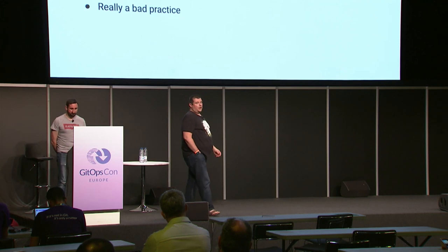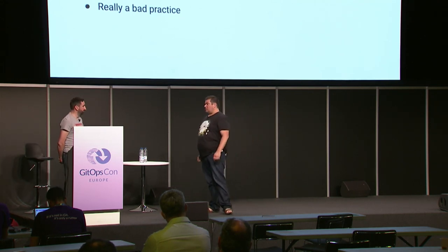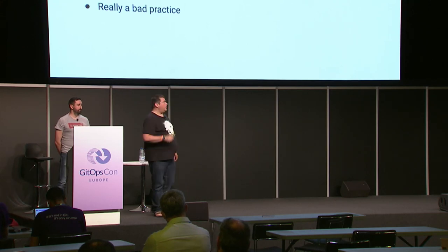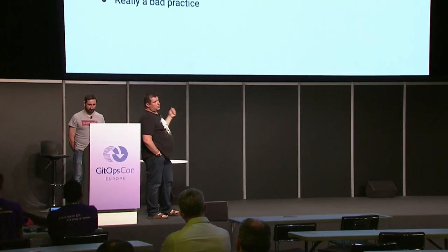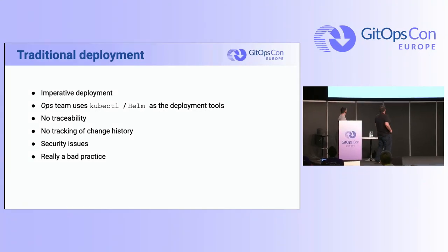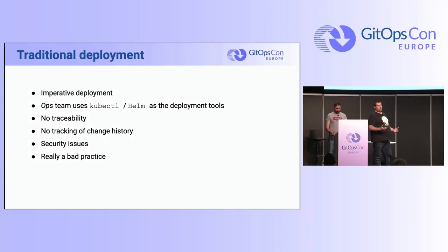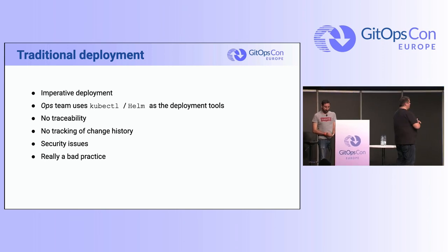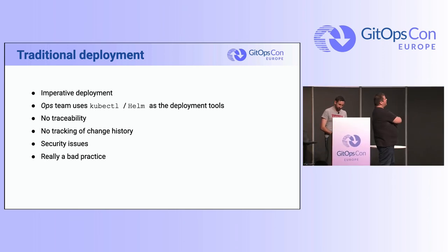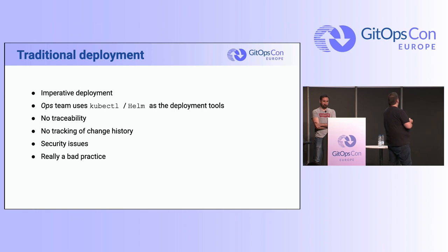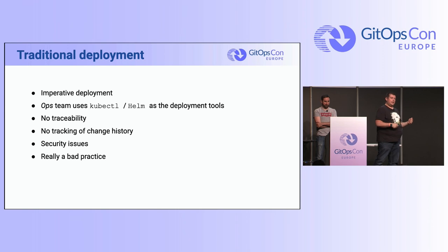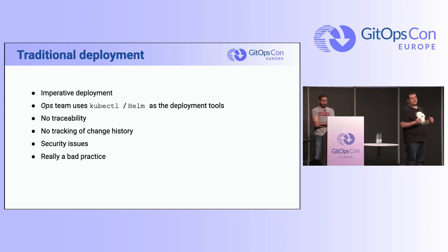When it comes to deploying on Kubernetes in a traditional way, teams use kubectl or Helm to deploy, and it comes with several issues — that's why GitOps exists. We don't have traceability at cluster scale, we don't have tracking of the history of our changes, and most of all, we've got security issues.